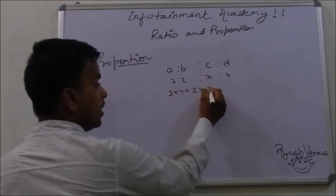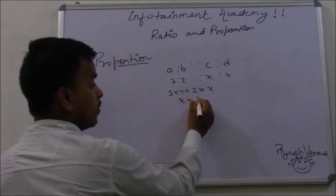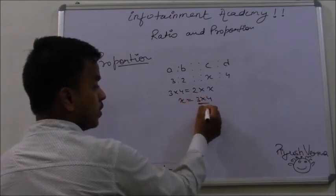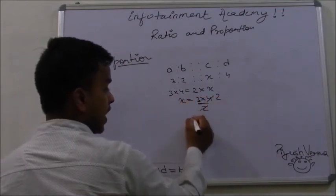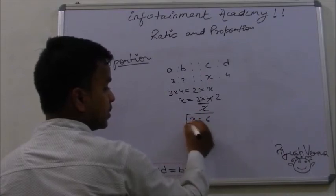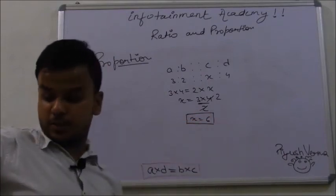Here, the extreme positions are 3 and 4, and the mean positions are 2 and X. Now, just simplify and find the value of X. 3 times 4 equals 2X. X comes out to be 6. This was a very simple question.